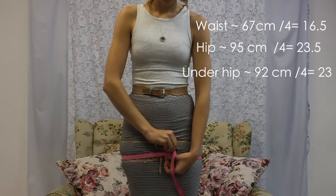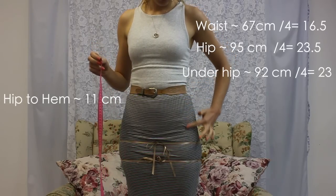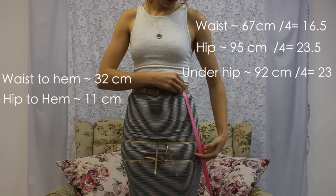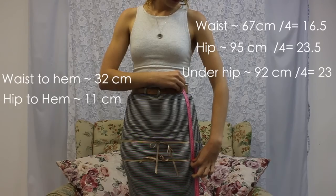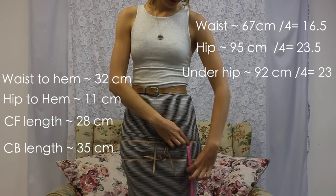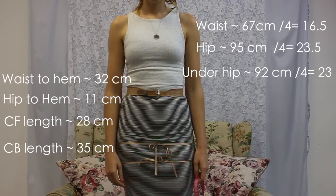Once you have the waist, hip and under hip, we want to divide them by 4 because that's necessary for the pattern that we're drafting. You then want two other measurements, which is our waist to hem measurement, and then you want your hip to hem measurement as well. The centre front which is shorter, so it's 28cm, and the centre back which I decided to lengthen and make 35cm.